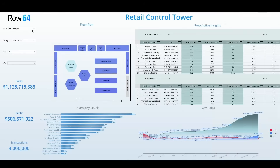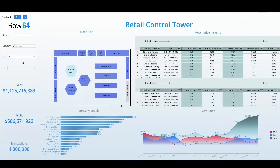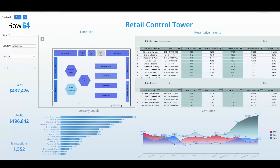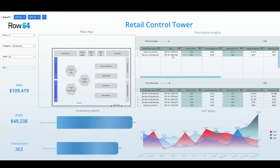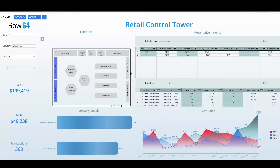Let's say I'm a store manager for store number 5. The real-time floor layout shows me exactly where the biggest opportunities are. Shelves shaded in darker tones highlight areas with strong upside potential. With an interactive filter, I can isolate those shelves and get instant prescriptive pricing information for every SKU they contain.